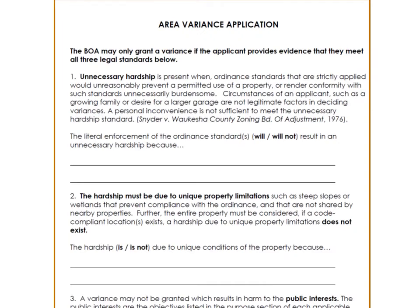A variance application should do three things. One, list each standard and explain what it means. Two, prompt the applicant to explain why they meet each standard. And three, let the applicant know the zoning board may only grant a variance if the applicant provides evidence to show that they meet all three legal standards.